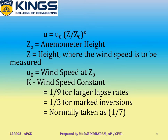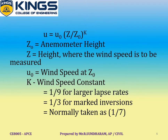In this formula, z0 is the anemometer height, z is the height where the wind speed is to be measured, u0 is the wind speed at anemometer height z0, and k is the wind speed constant. k is 1/9 for large lapse state, 1/3 for marked inversion, and normally taken as 1/7.